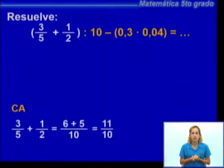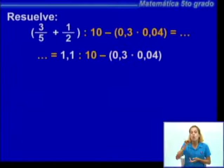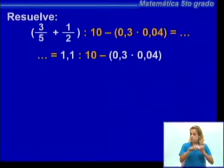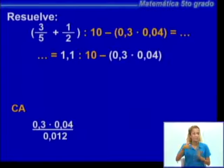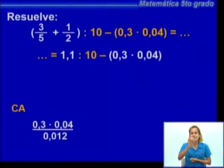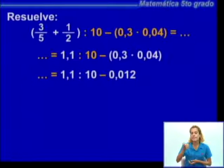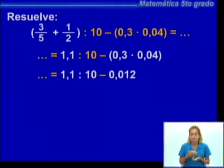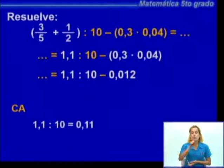Si convertimos 11/10 como expresión decimal, sería 1,1. Ya tenemos resuelto el primer paréntesis. Ahora resolvemos el segundo paréntesis: 0,3 por 0,04. Multiplicamos: 4 por 3 es 12. Como los factores tienen entre los dos tres lugares decimales, el producto tendrá también tres lugares decimales, que es 0,012, o 12 milésimas. Fíjate que vamos esquematizando el ejercicio para ayudar a la comprensión de lo que nos va quedando.